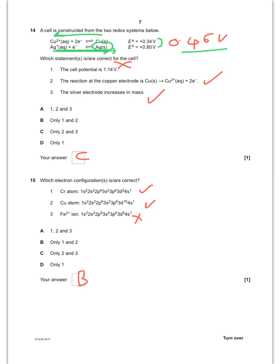And finally, which electron configuration is correct? Remember, chromium and copper are slightly odd. The atom, the Fe2 plus is incorrect. That must be incorrect because the 4S electrons are always lost first. So the answer is B.